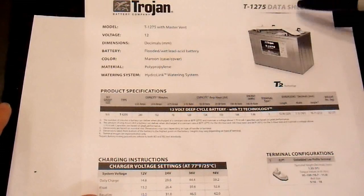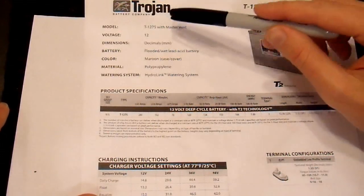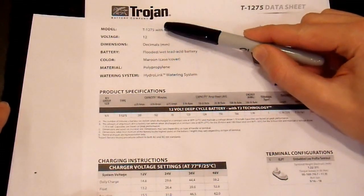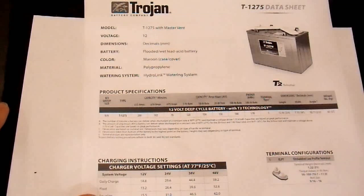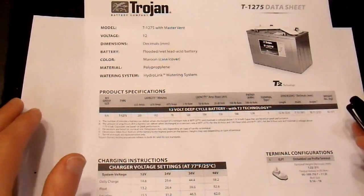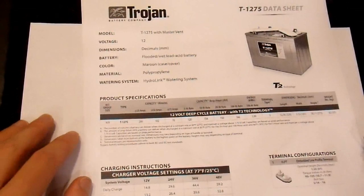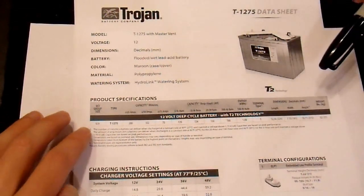Here I have a T1275 data sheet from Trojan. They're a very reputable battery manufacturer, and you can trust what they say. They know what they're doing. There's plenty of others that also do. This is just randomly chosen. I don't mean to endorse their particular brand.